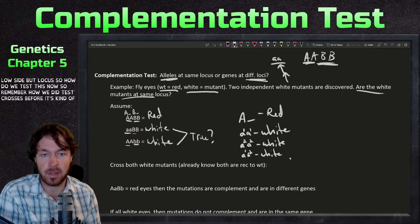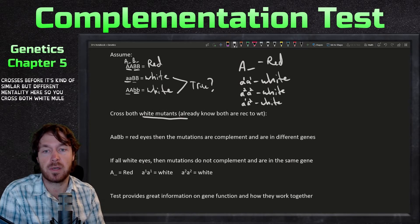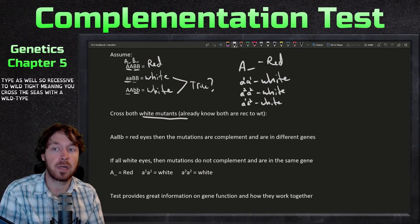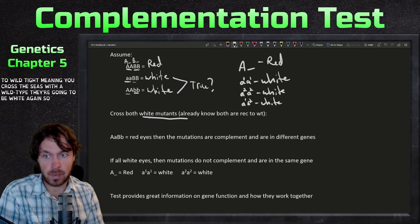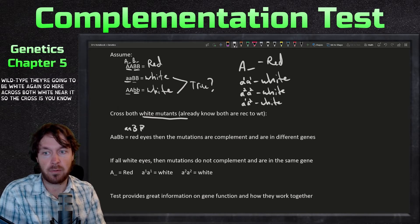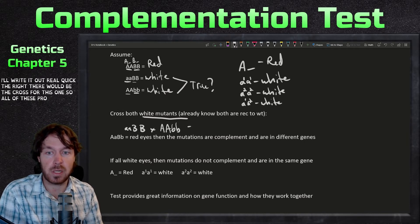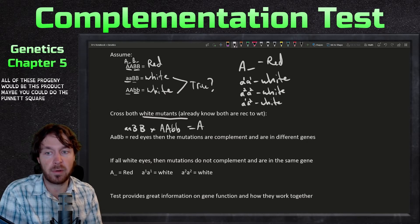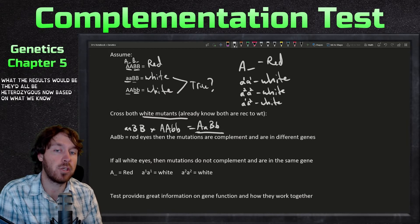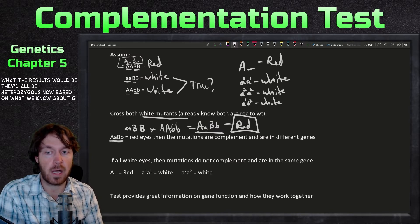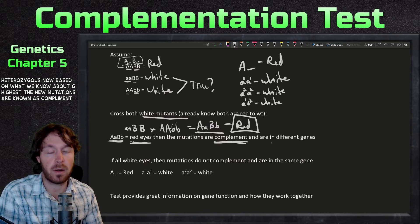So how do we test this? We cross both white mutants — we already know these are both recessive to wild type. You write out the cross, and all the progeny would be heterozygous. Based on what we know about genes, if each offspring is heterozygous, they should be red — the wild type. If heterozygous gives red eyes, the mutations are said to complement and are in different genes.